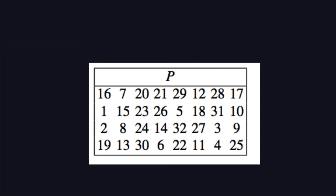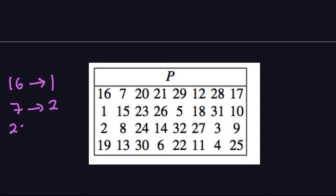The value 16 in position 1 means that the bit in position 16 will go to position 1. Then looking at the second entry, that's 7, so the bit in position 7 will go to position 2. Then 20 will go to position 3, and so on and so forth.